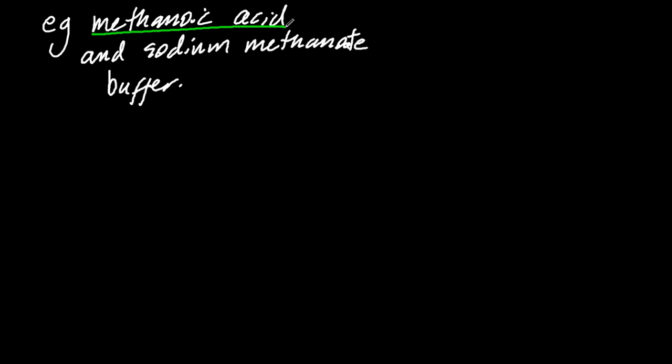Let's start with an acidic buffer first. So it's made with a weak acid, such as methanoic acid, and the salt of a weak acid, sodium methanoate, for example.